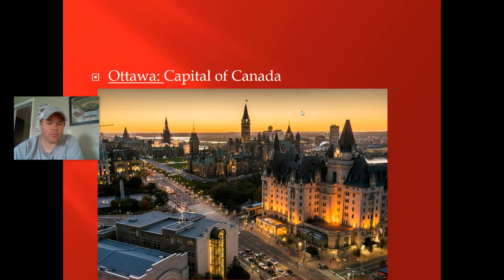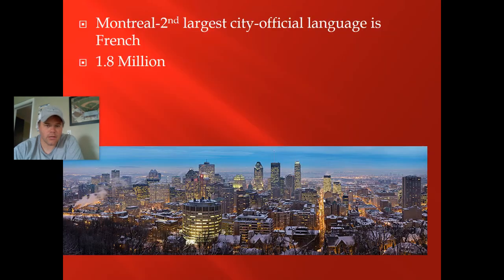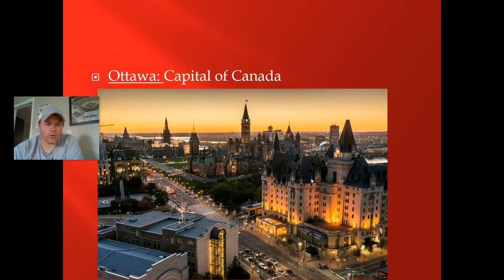Ottawa is Canada's capital — it's like their Washington D.C. It's not really part of a province; it's its own distinct region. Ottawa is their capital city.